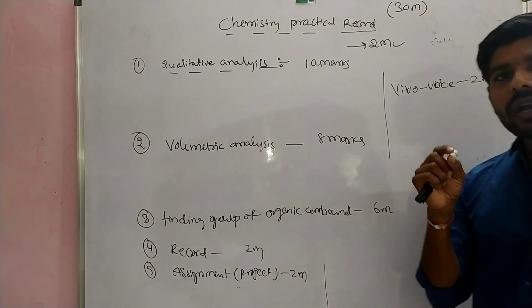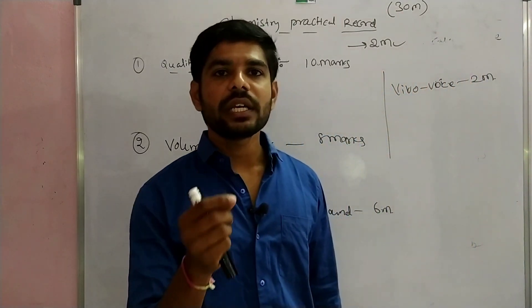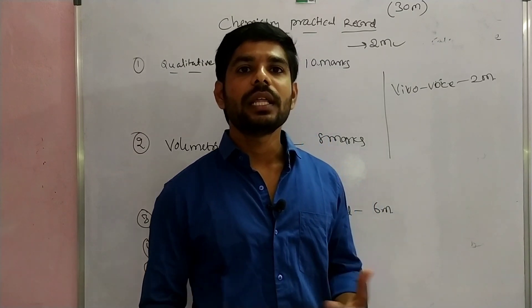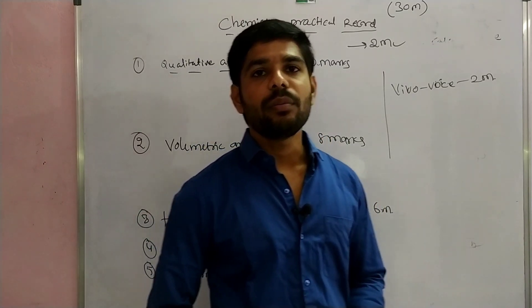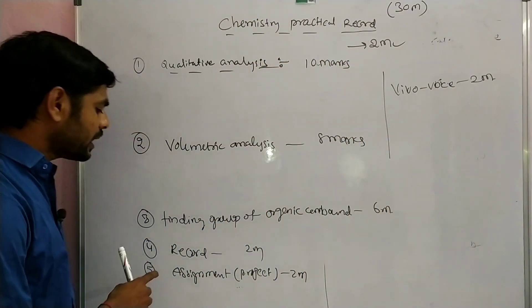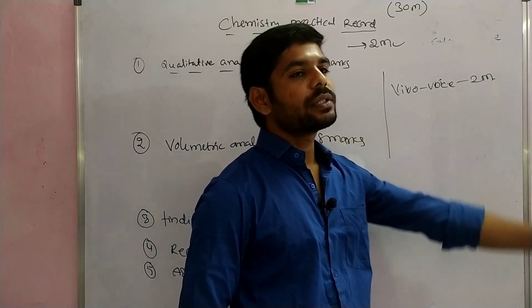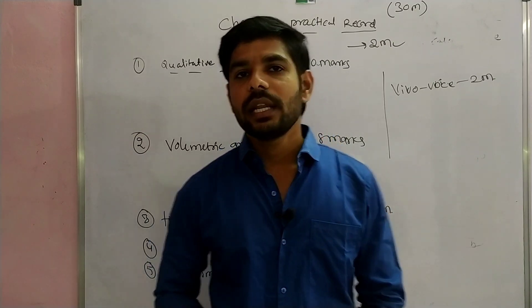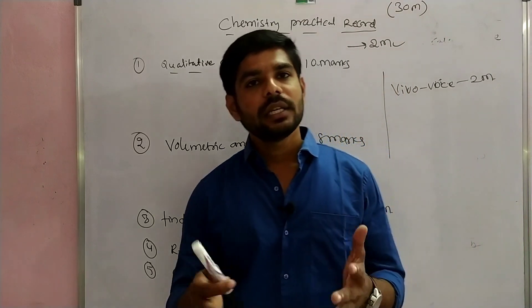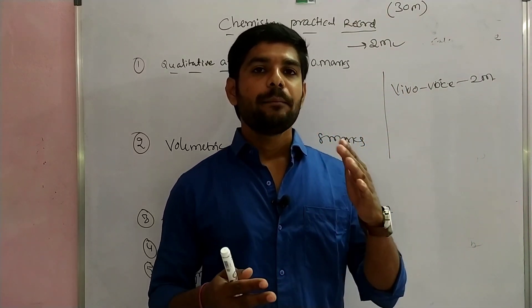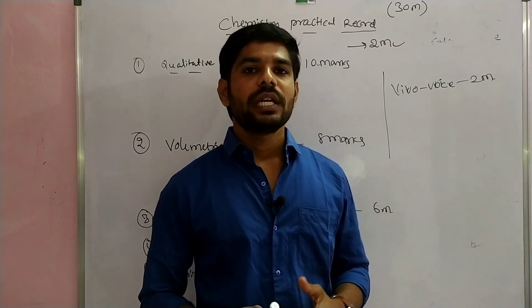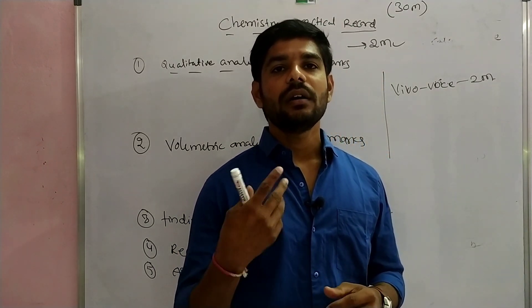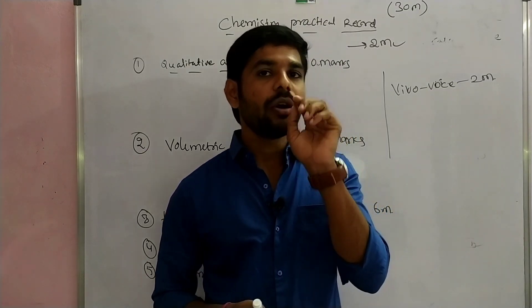Next is finding the group of organic compounds. We also have two marks for the assignment. When you open your record, you will always have the certificate first. You will have the name of the student, then the class and roll number.